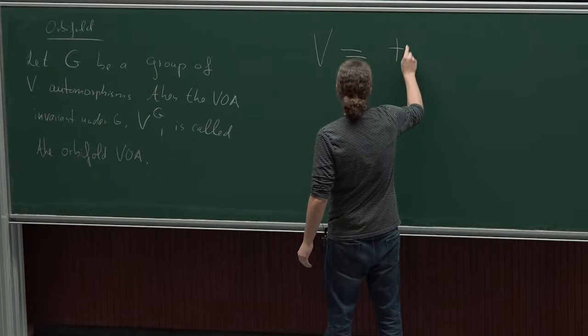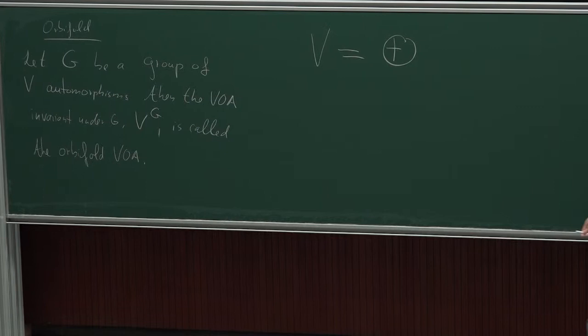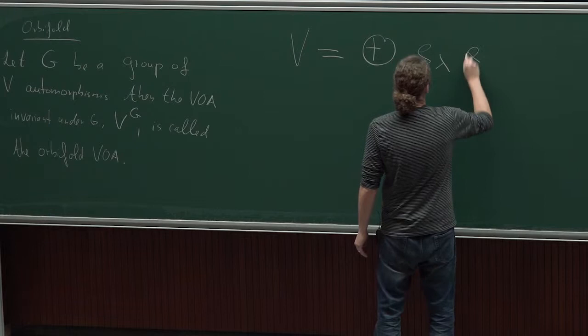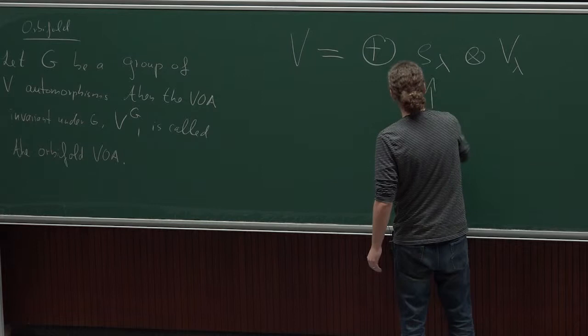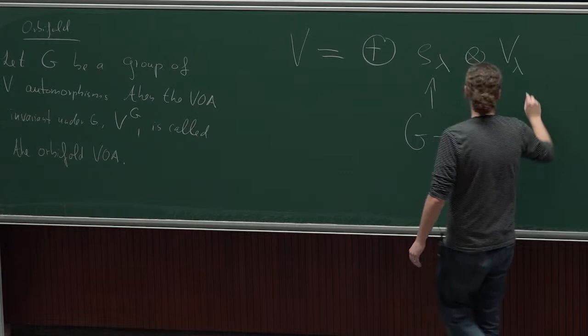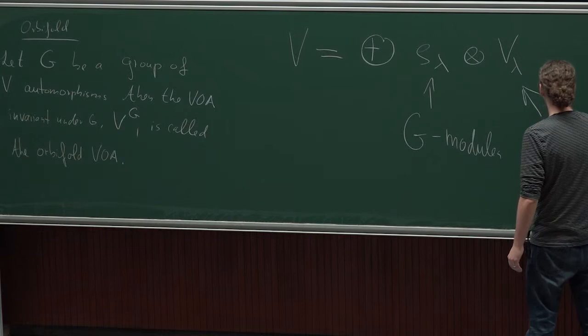Especially if you take our big view V, then it decomposes into modules of our subalgebra and of our group. So we can write it as a module for finite-dimensional representations of our group and then multiplicity spaces. These are modules for the group and modules for the orbifold VOA.